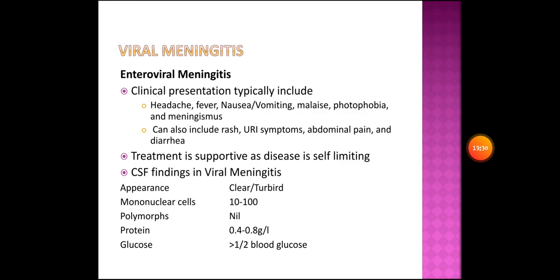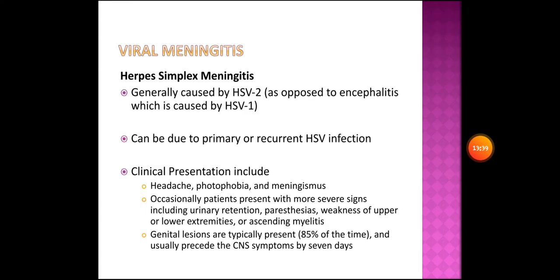CSF findings in viral meningitis: appearance will be clear or slightly turbid; mononuclear cells 10 to 100; polymorphs not present; protein 0.4 to 0.8 g/L; and glucose greater than half of normal blood glucose.